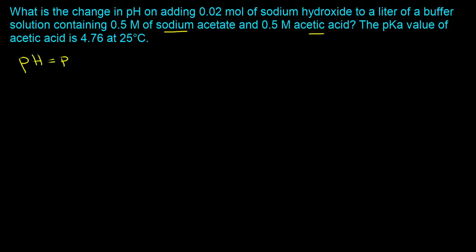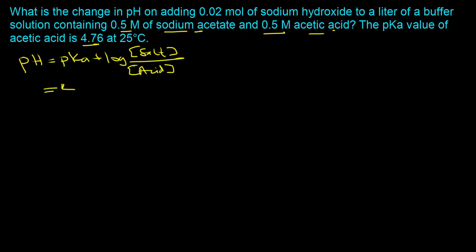We have sodium acetate and acetic acid, so we use the weak acid and salt version: pH = pKa + log([salt] / [acid]). You want to memorize this equation if you have an exam coming up. Plugging in values: pKa = 4.76. Both the salt and acid concentrations are 0.5, so log(0.5 / 0.5) = log(1) = 0. Therefore pH = 4.76. Basically, when the concentrations of salt and acid are equal, the pH equals the pKa.